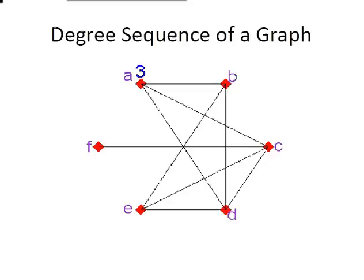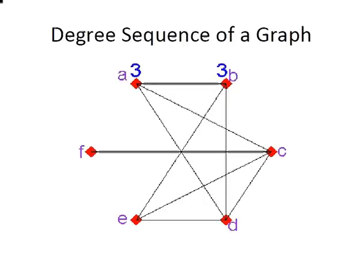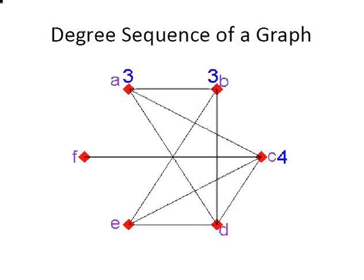So in the case of vertex a, we have three edges, so the degree is three. We're going to move on to b now. Again, the degree here is three. Down at vertex c, the degree is four. There are four edges.